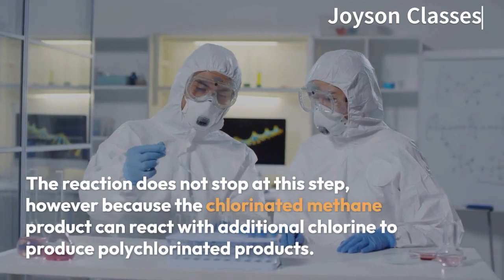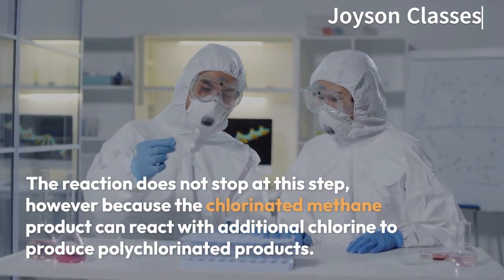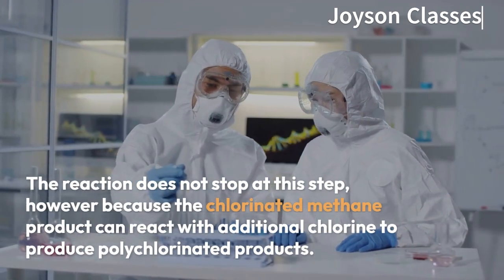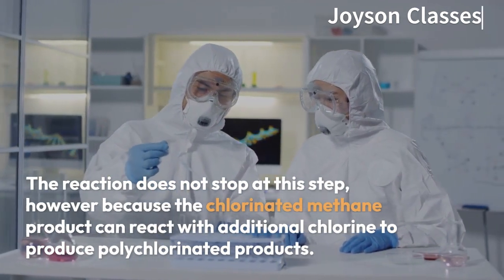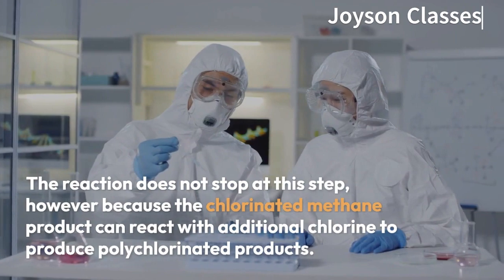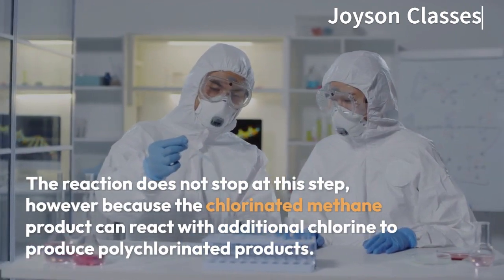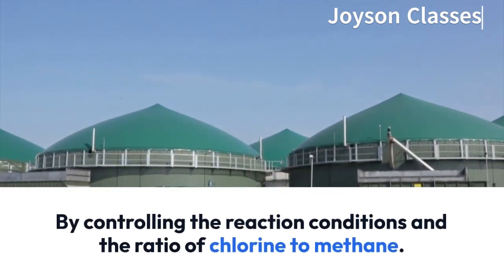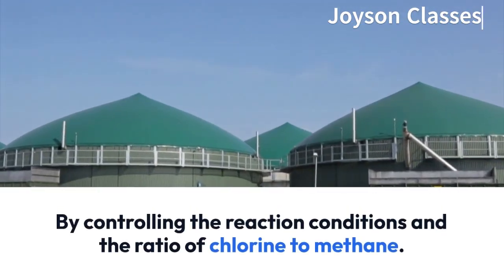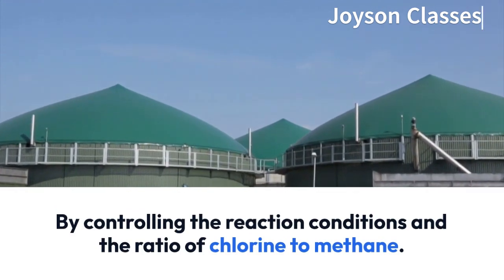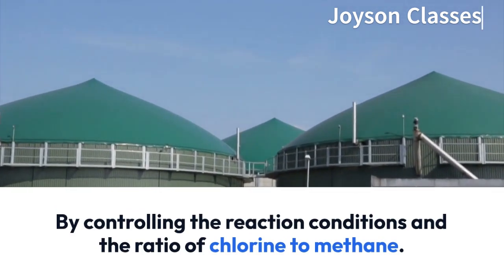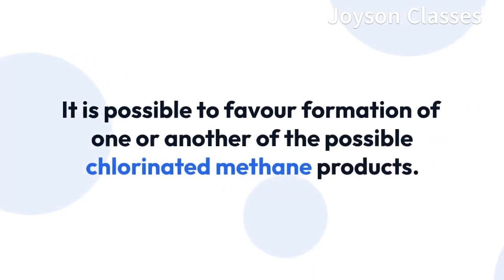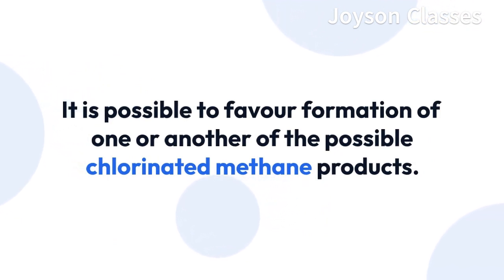The reaction does not stop at this step, however, because the chlorinated methane product can react with additional chlorine to produce polychlorinated products. By controlling the reaction conditions and the ratio of chlorine to methane, it is possible to favor formation of one or another of the possible chlorinated methane products.